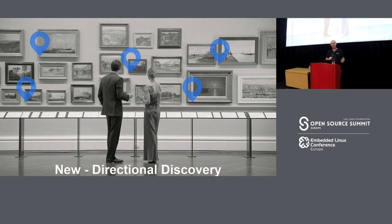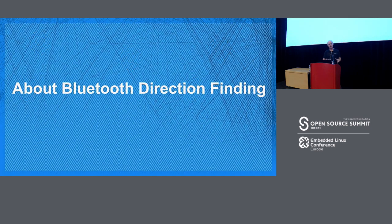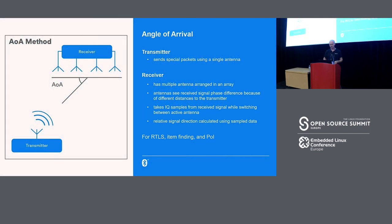With direction, new things become possible. One of the use cases we're thinking about is what we call directional discovery. So you point your phone at specific things over there and you get information about those specific things. Because your phone, plus the Bluetooth direction finding capability, knows what you're pointing at. You're pointing at that specific painting, so I get information about that. New things become possible with direction finding, and that's precisely what the Bluetooth 5.1 specification delivers.